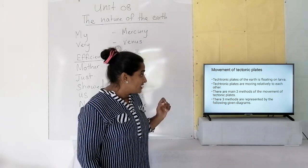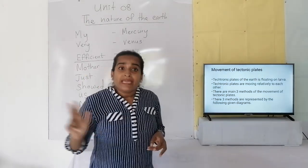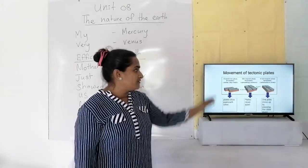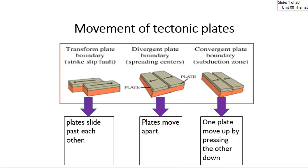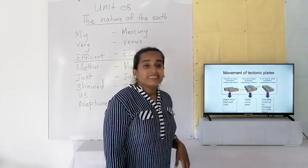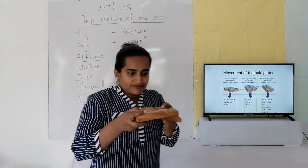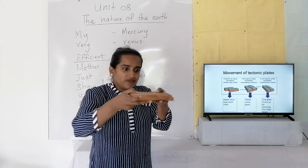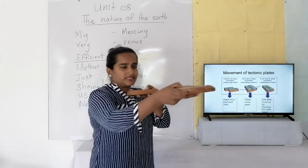When we consider this movement, there are three main methods of movement of tectonic plates. I have represented these by diagrams. The first method is called slide past — one plate moves forward while the other moves back, sliding past each other.